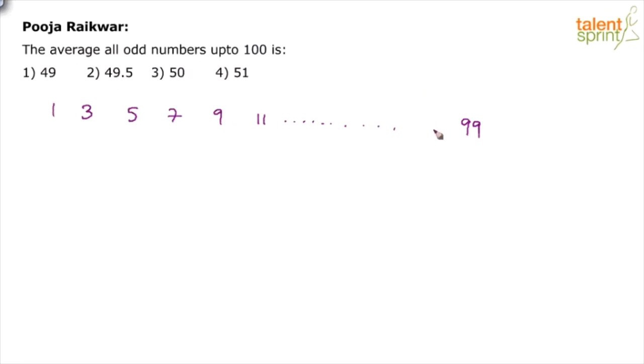How many such numbers would be there? 50 numbers. In the first 100 numbers, 50 are odd and 50 are even. 50 odd and 50 even numbers, right?